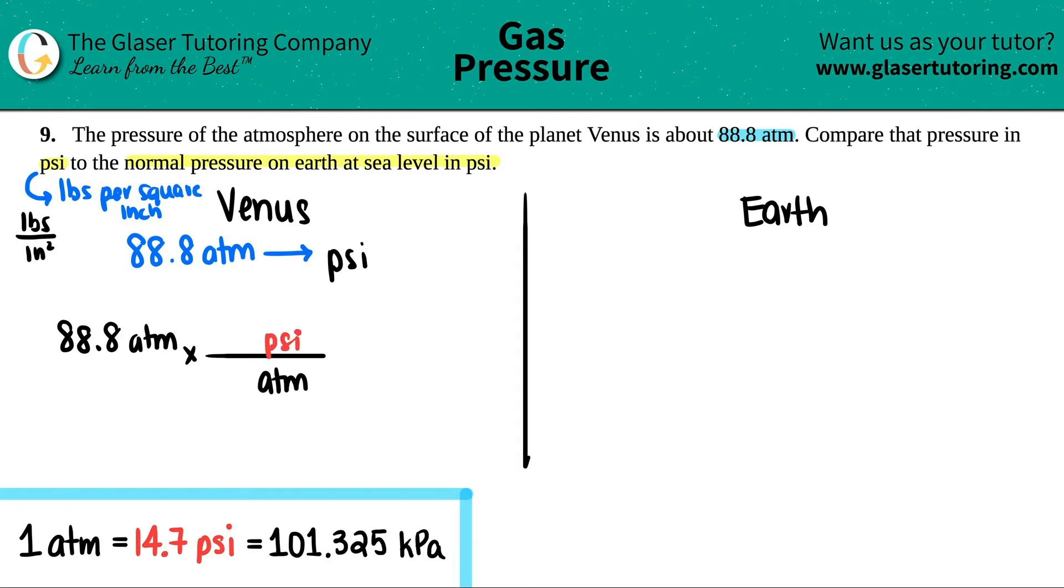Now you're probably going to have to memorize your conversion factors for pressures, or maybe your teacher or professor might give them to you, but I just put them down here. These three are all equal to each other. So you just have to pick the one that the conversion factor is asking for. In this case, we only care about PSI and ATM. So for every one ATM, there's 14.7 PSI. The one goes down with the ATM, there is 14.7 PSI. ATMs cancel. You're left with the unit that you want. And all we got to do is 88.8 times 14.7.